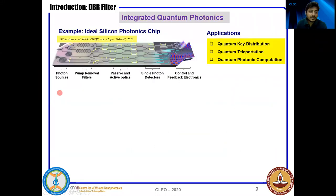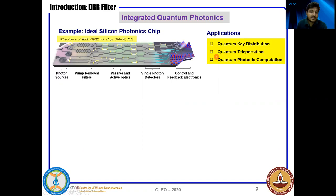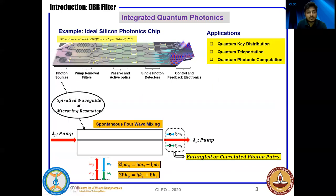Due to CMOS compatibility, scalability, and high nonlinearity of silicon, integrated quantum silicon photonics has seen rapid development over the last 5 to 6 years in many quantum applications like entanglement distribution, teleportation, and photonic computation. In 2016, Silverstone et al. proposed how the architecture of a large-scale quantum silicon photonics chip will look like based on these functionalities. Now all quantum applications need some kind of source for single photons or entangled photon pairs.